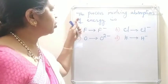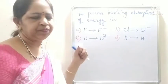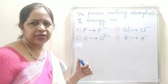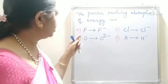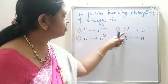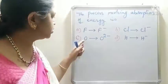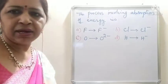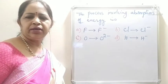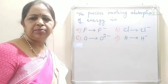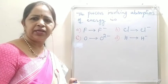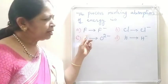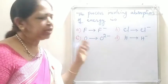Next question: the process involving the absorption of energy. Which process involves the absorption of energy? The options are F becoming F⁻, Cl becoming Cl⁻, O becoming O²⁻, and H becoming H⁻. That means electrons are added. When an electron is added to a free neutral gaseous atom, the energy released is known as electron affinity. Here, electron affinity values are involved in these processes.